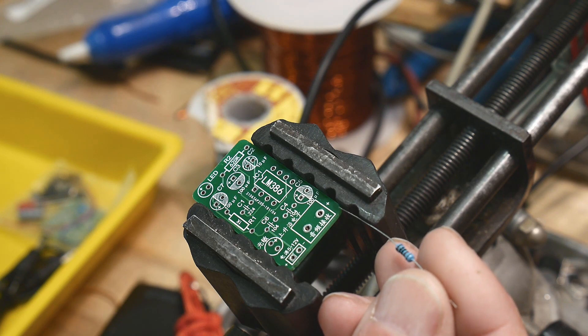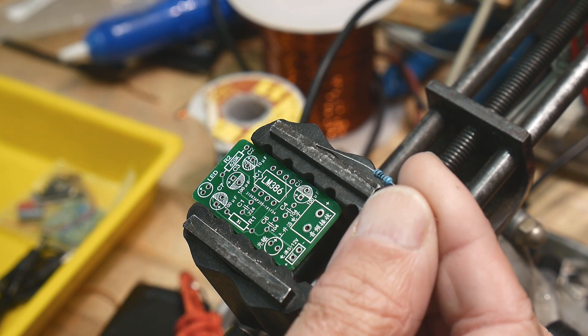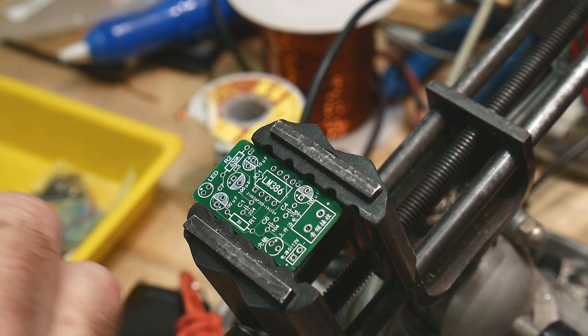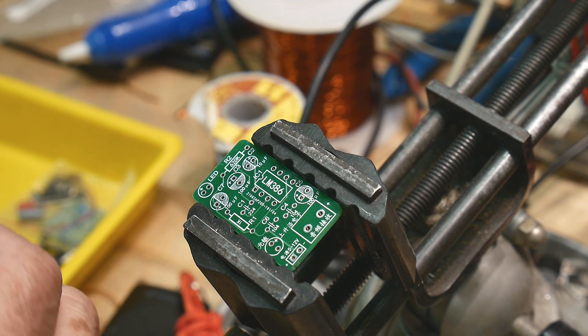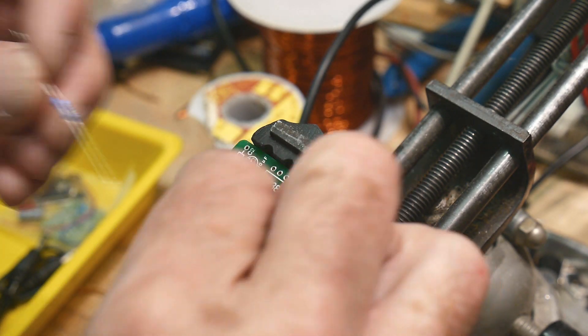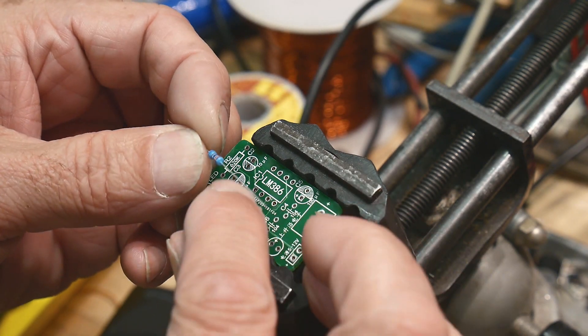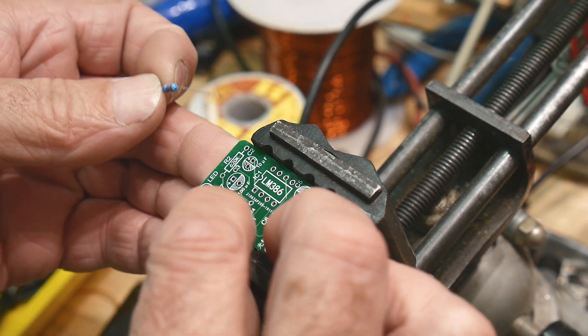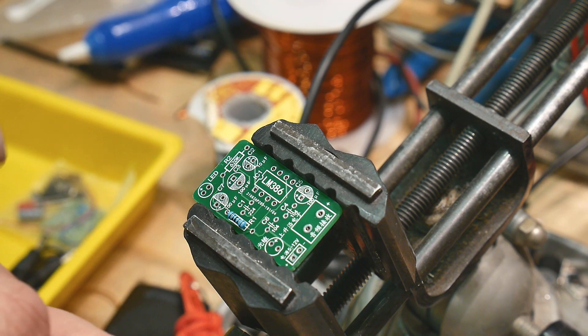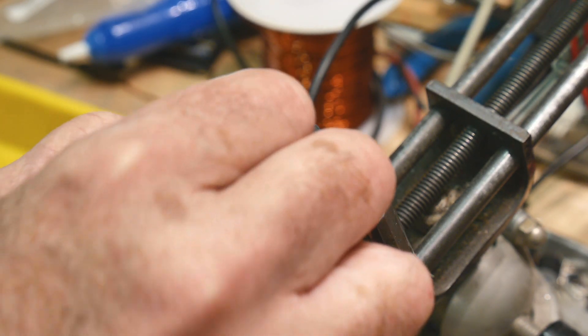This looks like a 1K to me - brown, black, black, brown. We'll call that 1K. And this one is blue, red, black, orange. Sounds right to me.